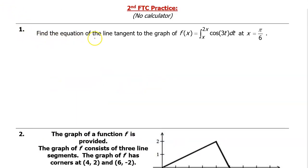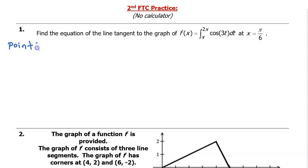Problem number one. Find the equation of the line tangent to the graph of f of x equals this integral defined function at x equals pi over 6. When we are asked to find the equation of a tangent line, we know that we need to find a point and the slope. Let's start with the point. They already gave us the x coordinate of the point — it is pi over 6.